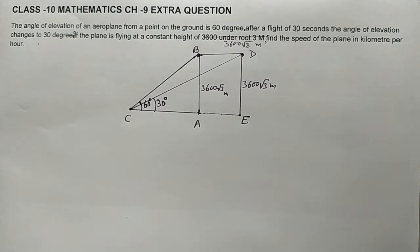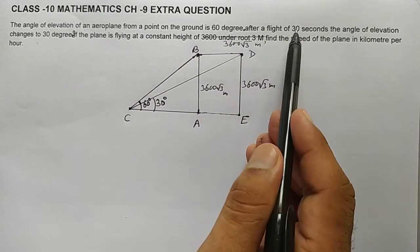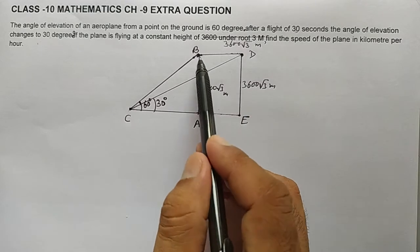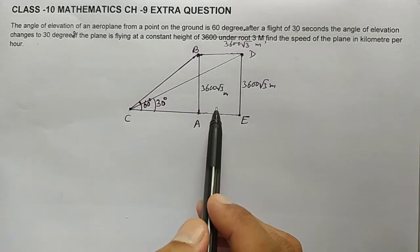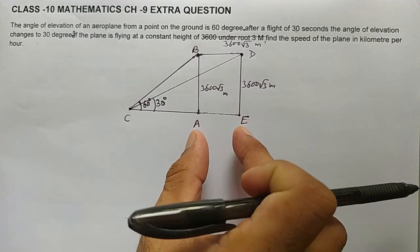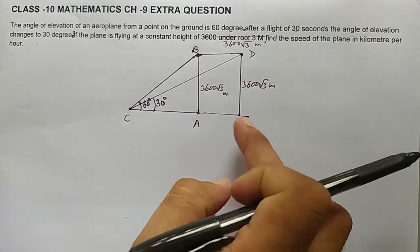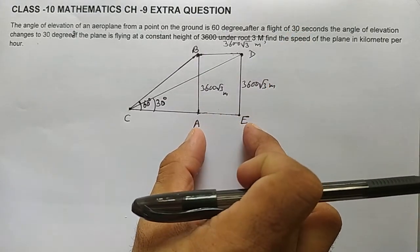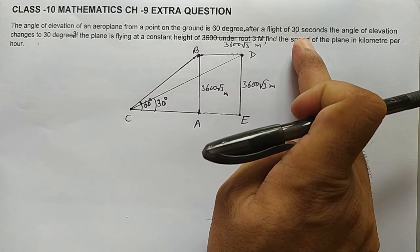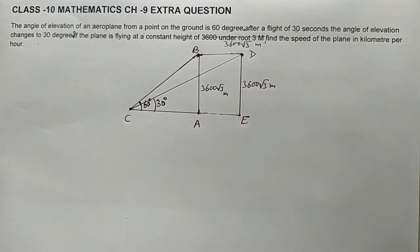We need to find the speed of the aeroplane. Speed equals distance over time. We have the time: 30 seconds. So our goal is to find the distance AE, which equals BD — the distance the plane traveled in 30 seconds. Once we find AE, we divide by 30 to get the speed.